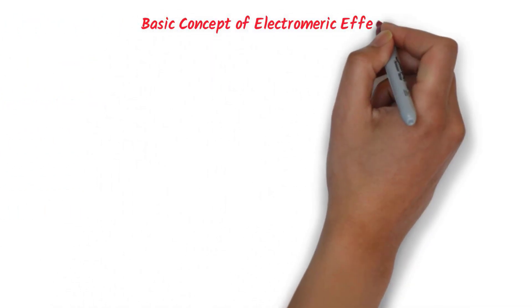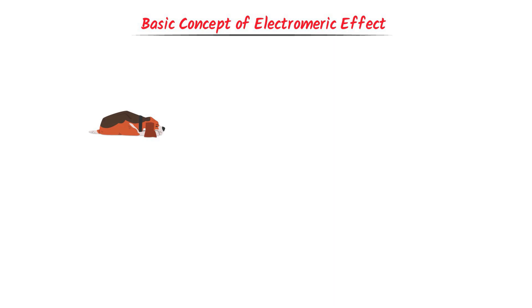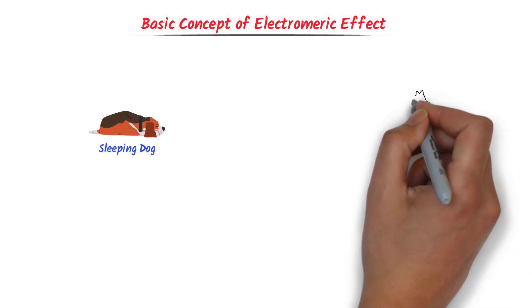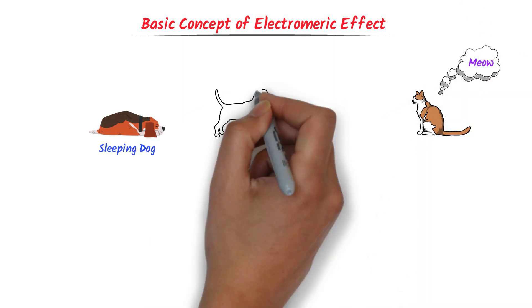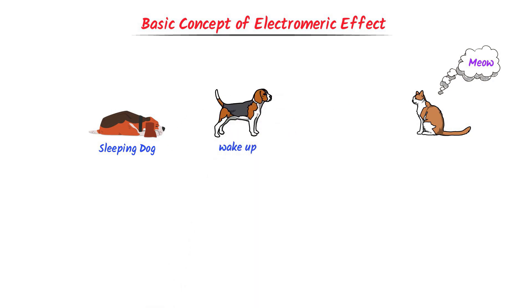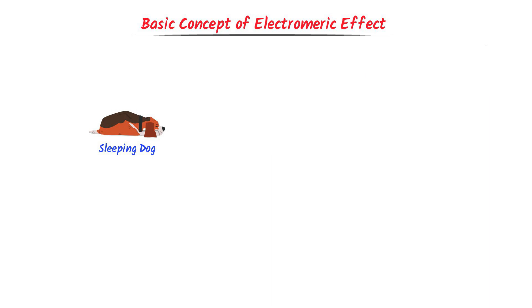First, let me teach you the basic concept of electromeric effect using an analogy. Consider a sleeping dog. Now let it hear the sound of a cat — the sleeping dog will instantly wake up, and there are 100% chances that the dog will attack the cat. Consider the opposite case: if there is no sound of a cat, the dog will enjoy its sleeping period.